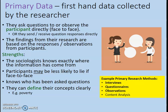Key strengths of primary data collection include that the sociologist knows exactly where the information has come from. Arguably, if it's face-to-face, participants might be less likely to lie — if you're completing an interview or questionnaire with someone there, you might think they'll spot if you lie. The researcher also knows who has been asked these questions, so they can be more certain that they've reached the right people.